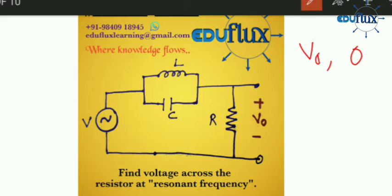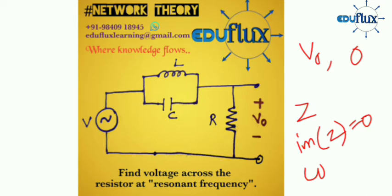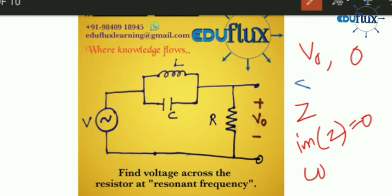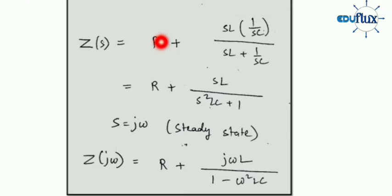There is an inductor L, a capacitor C, a voltage source V whose frequency we can change, and a resistance R in series with the parallel LC combination. We are asked to find the voltage across the resistor at resonant frequency. Now, the conventional way to find the resonant frequency is to write the equation for Z, then equate the imaginary part of Z to zero to get the value of omega for which the circuit is purely resistive.